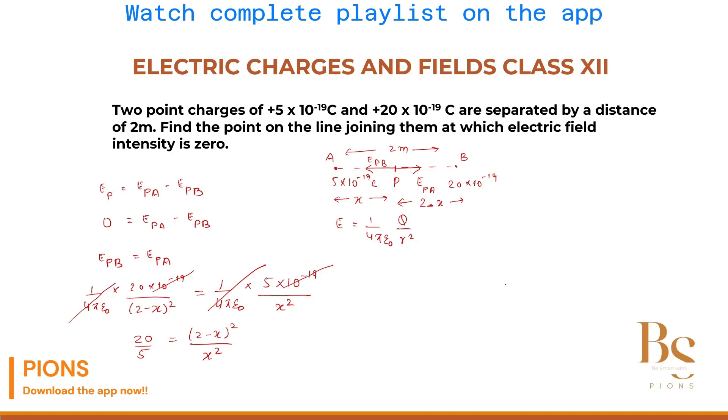So 20 upon 5, that will be our 4, equals to 2 minus X upon X whole square. Now let's take root on both the sides. Taking here root, it will be 2, which will be equal to 2 minus X upon X.